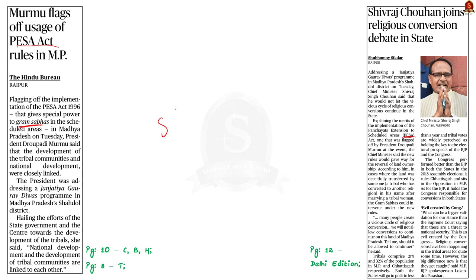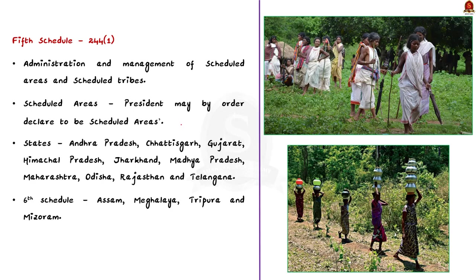The Fifth Schedule of the Indian Constitution deals with the administration and management of scheduled areas and scheduled tribes. These areas contain scheduled tribe population as their majority. The Fifth Schedule comes under Article 244, Clause 1 of the Constitution, which means that areas defined by the order of the President of India are termed as scheduled areas.